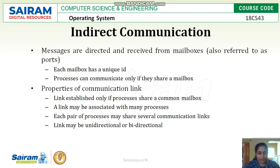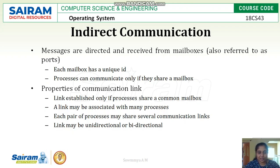Next is indirect communication, which happens based on a mailbox. Each mailbox has a unique ID. Processes can communicate only if they share a mailbox. For example, if processes A, B, and C share a mailbox, then A can send data to B and C, and B and C can send data to the other remaining processes. A process that does not share the mailbox cannot communicate within that group.